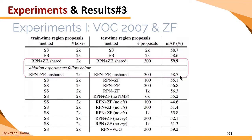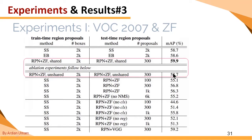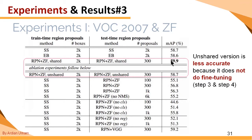The first ablation investigates the effect of sharing CNN versus unshared CNN. Sharing means in the training phase we use all four steps, doing step 3 and step 4 for fine-tuning. Unshared means we only do step 1 and step 2. The result for unshared is a little bit worse. Of course, because for the shared version, we do fine-tuning in steps 3 and 4, which improves performance slightly.